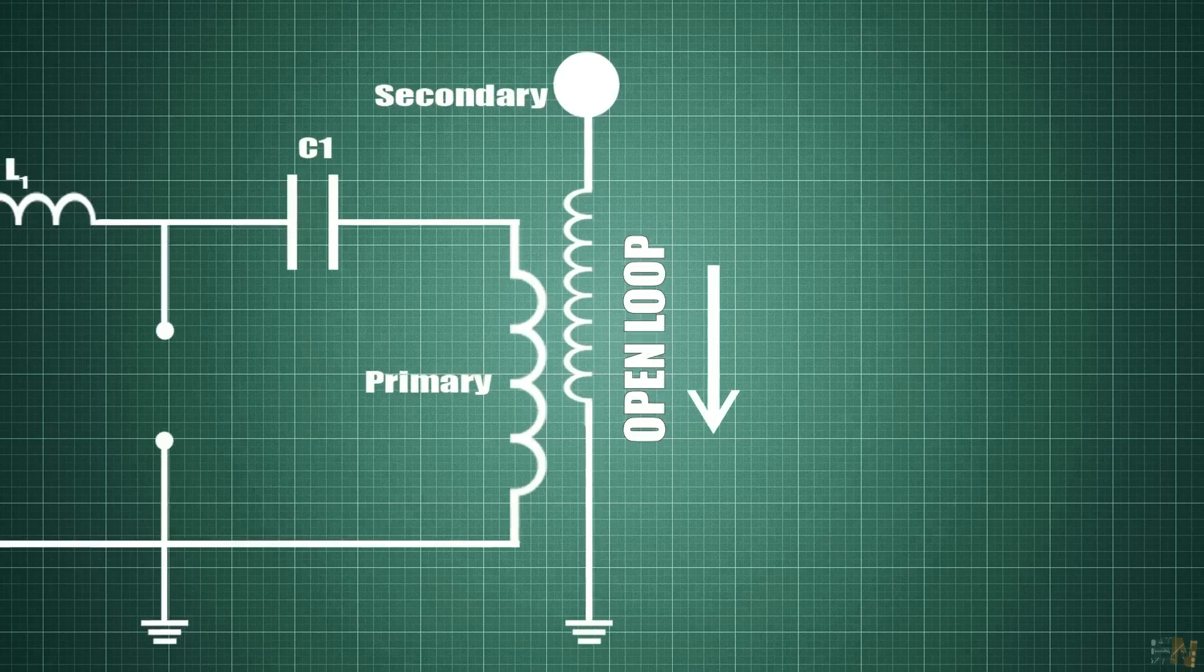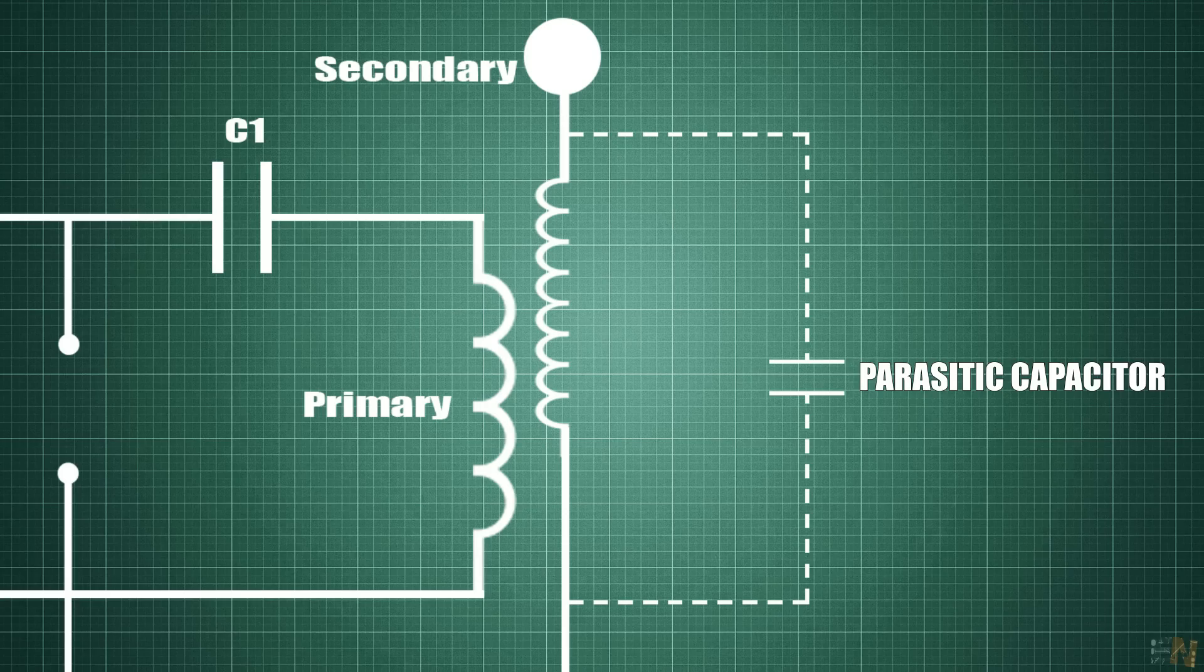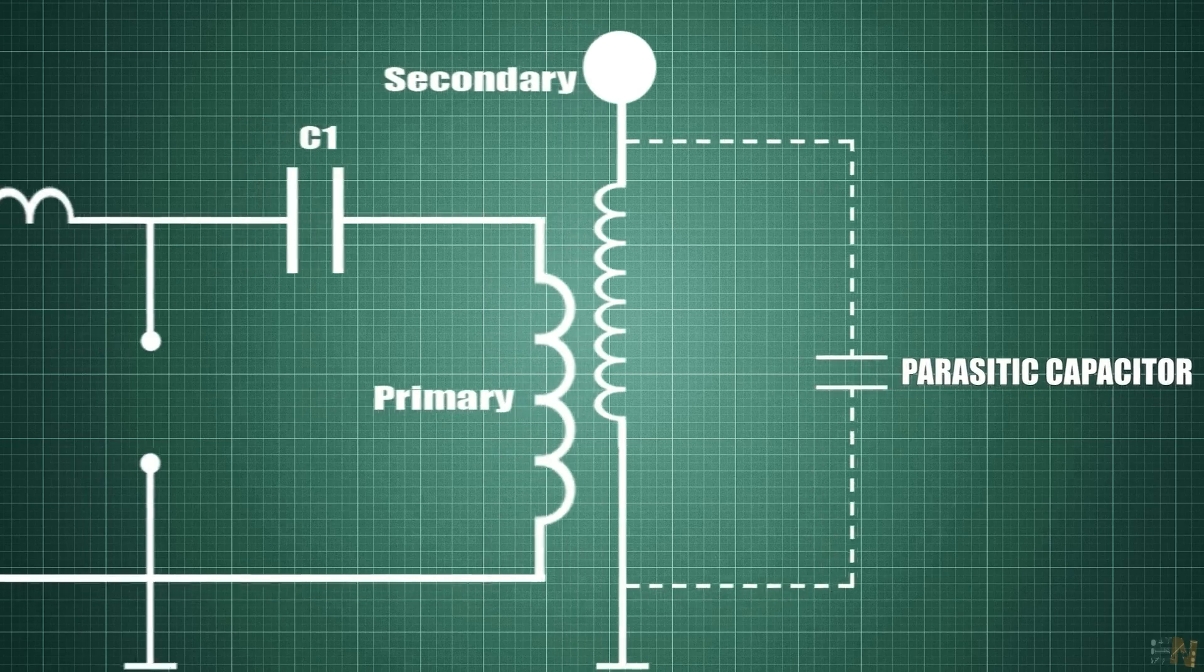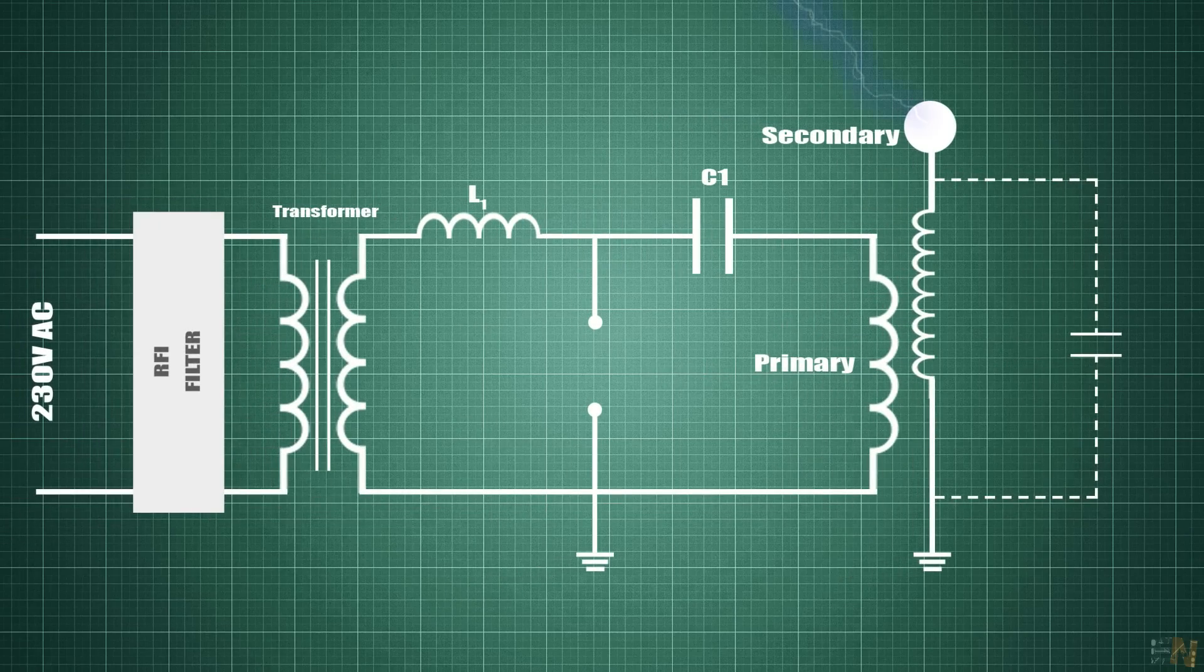But actually, the voltage arc will be created between the top of the coil and the parasitic capacitance created by the air around. This capacitance is very small, but good enough. So the air at the top of the coil will ionize and voltage arcs are created and shooting out through the air.